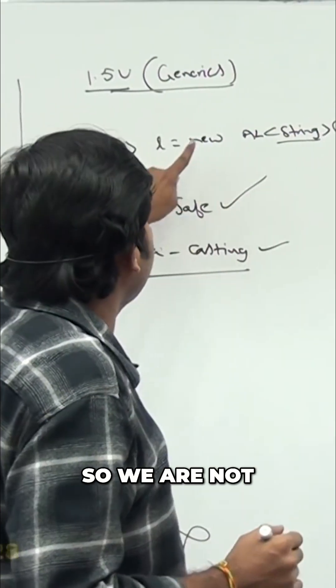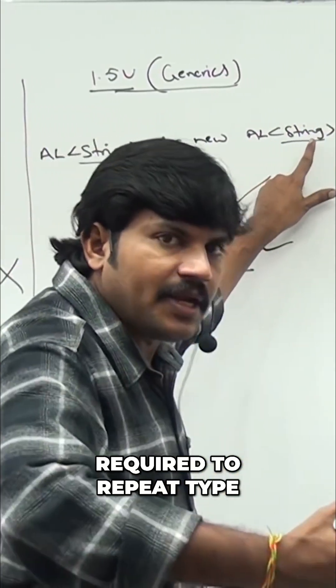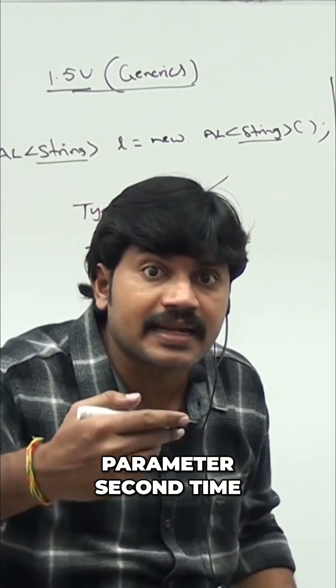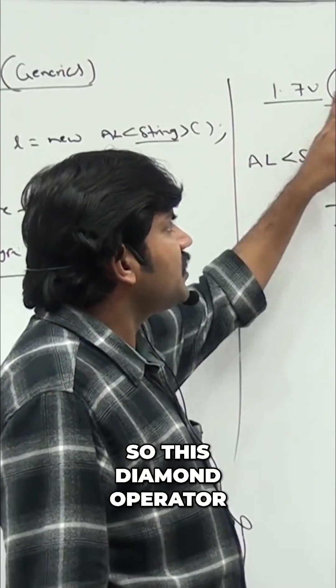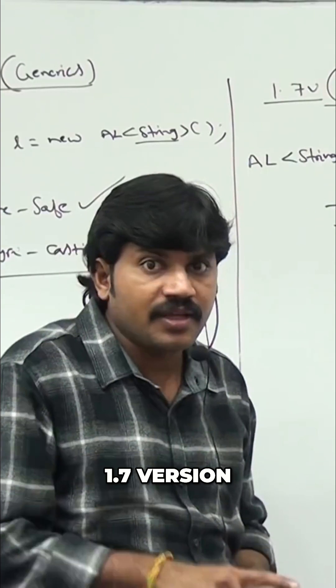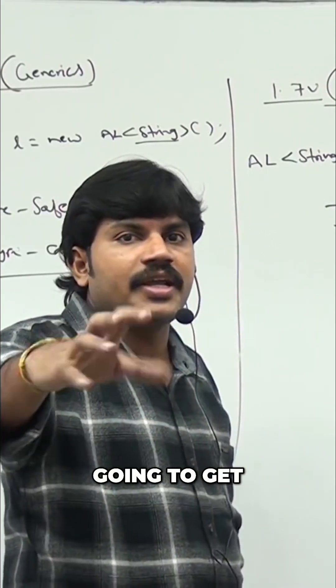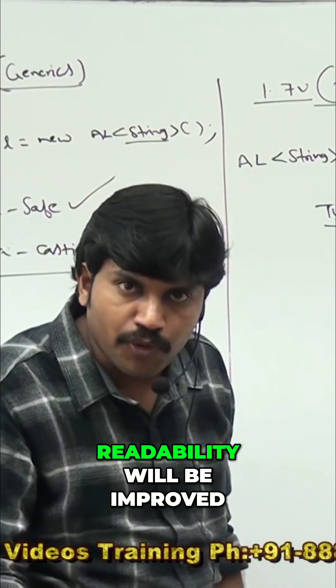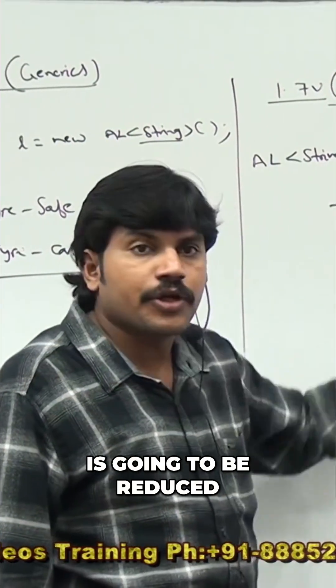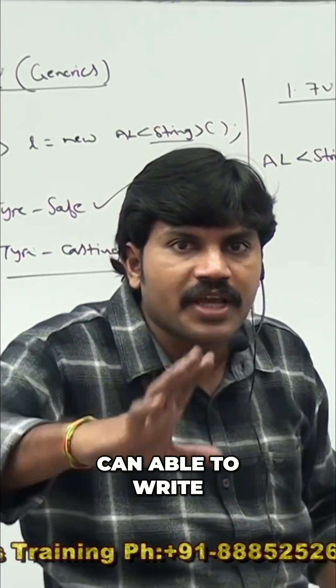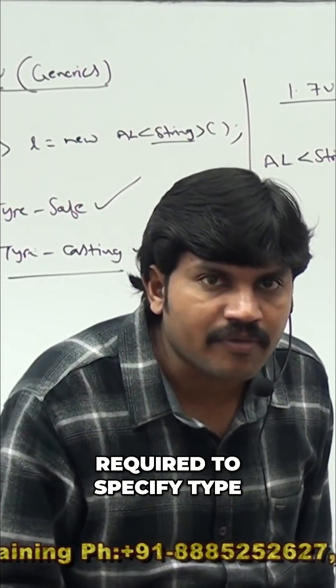This diamond operator which came in the 1.7 version, what advantage we are going to get? Readability will be improved, length of the code is going to be reduced. Concise code we can write because we are not required to specify type parameter second time.